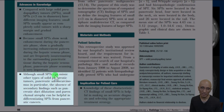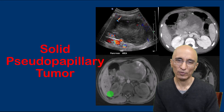Small SPTs can mimic other solid pancreatic lesions. However, unlike adenocarcinoma, which is one of the common solid pancreatic masses, the lesion does not cause dilatation of the pancreatic duct, which can be a useful differentiating feature. I hope you found this video to be informative. Thanks for your attention.